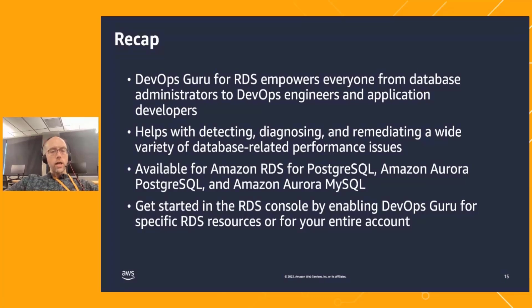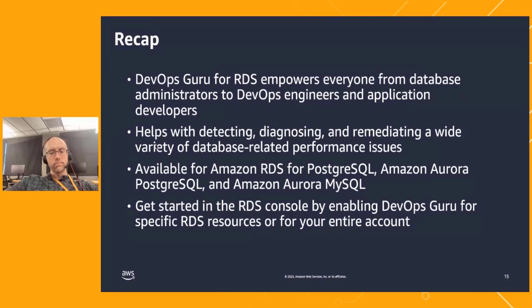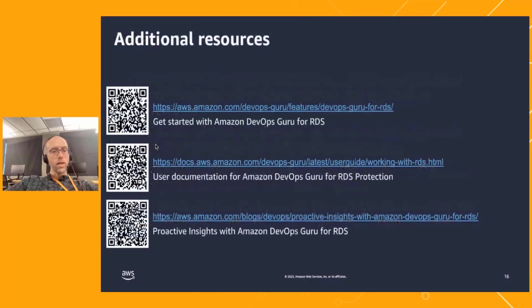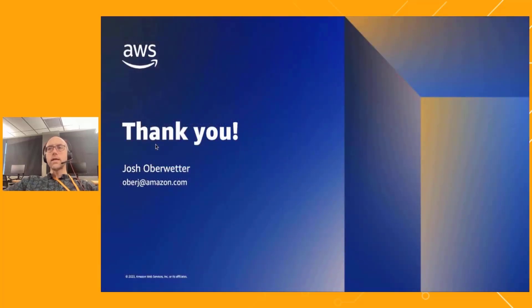We think the tool helps you to detect, diagnose, and fix a wide variety of problems. It's available for three of our RDS database engines today: RDS for Postgres, Aurora for Postgres, and Aurora for MySQL. You can get started in the RDS console by enabling DevOps Guru for specific databases or for entire accounts. We'd love to hear about how you're using Amazon DevOps Guru for RDS and how we can help you prevent or solve database performance issues. Thank you for your time.